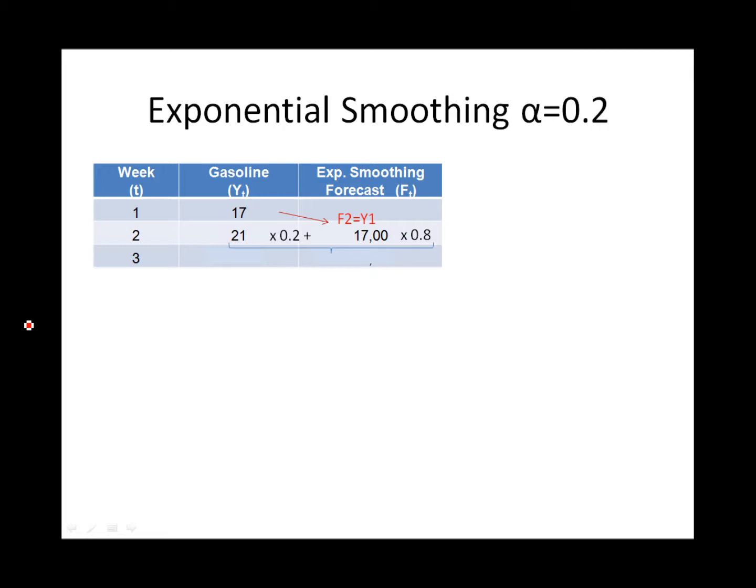The forecast for week 3 equals 0.2 times the actual in week 2, which is 21, plus 0.8 times the forecast in week 2, which is 17. When you add them up you get a forecast of 17.8.